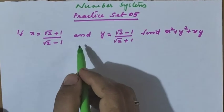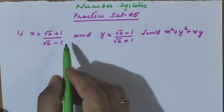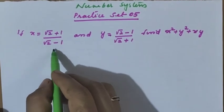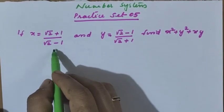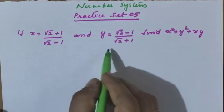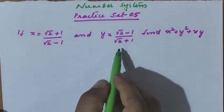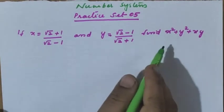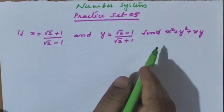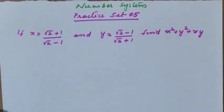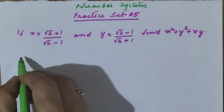Practice set 5, number system. x equals root 2 plus 1 divided by root 2 minus 1, y equals root 2 minus 1 divided by root 2 plus 1. Find x squared plus y squared plus xy.